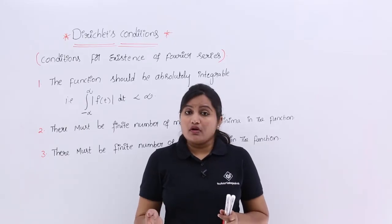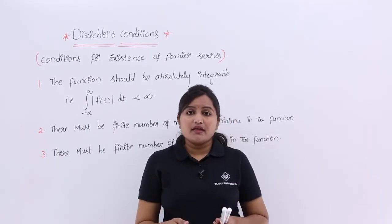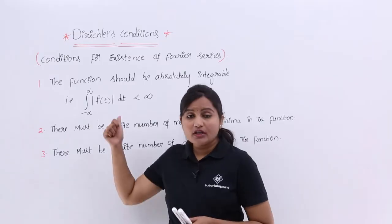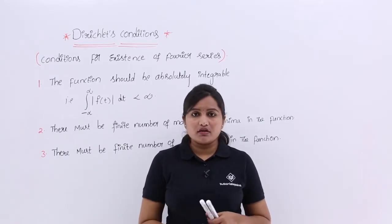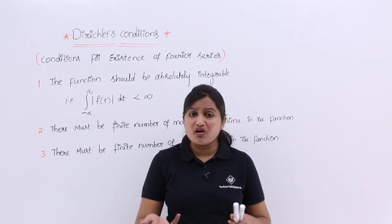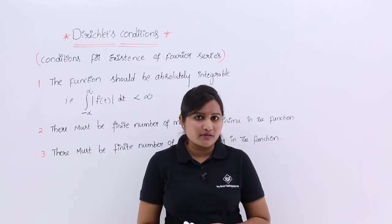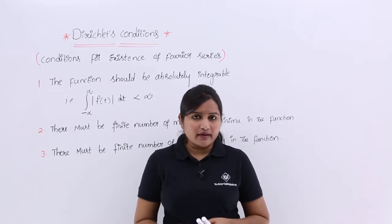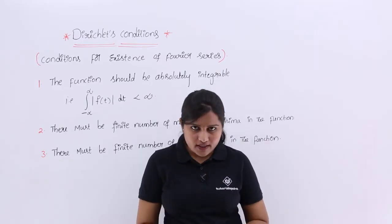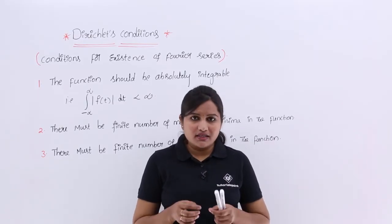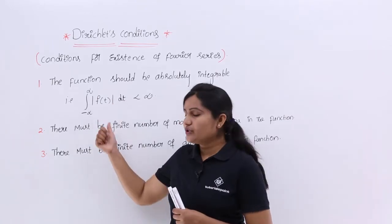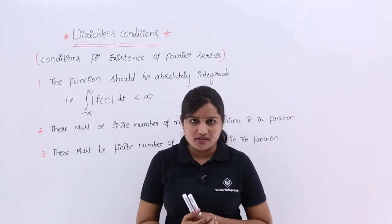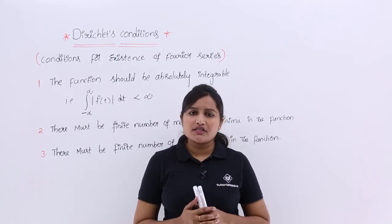If you mistakenly attempt Fourier series representation without observing these conditions, you cannot represent that Fourier series — you cannot get a valid result for approximation. That is why, whatever signal you want to represent in Fourier series, you need to check these three conditions first. These three conditions are called Dirichlet conditions.